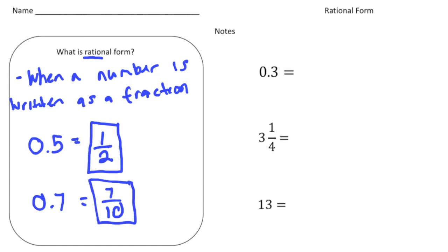So let's do a few more examples here. So 0.3 in rational form would be 3 over 10. Now here we have a mixed number, we have 3 and a fourth. So in order to make this in rational form, we need to make it improper. So if I do 3 times 4, that's 12, plus 1 is 13. So 13 fourths is 3 and 1 fourth in rational form. It's a fraction now, right?